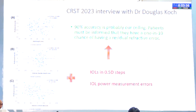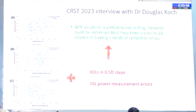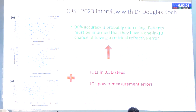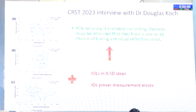Because IOLs come in 0.5-diopter steps and there are power measurement errors — a manufacturer's machine has an inbuilt measuring error of 0.18 standard deviation — a 0.2 diopter error exists at the manufacturer's end. These small errors of 0.1 or 0.2 can cancel each other or accumulate, and once in a while you will have a patient with an unusual refractive result. Douglas Koch in CRST 2023 said 90% accuracy is probably a ceiling given current technology, and patients must be informed they have a 1-in-10 chance of residual refractive error.